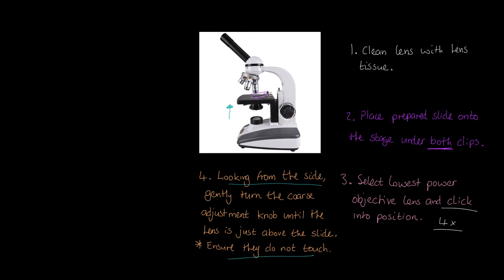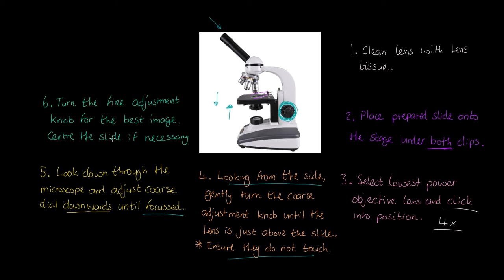So, next in our process, number five. Look down now through the eyepiece lens. And adjust the coarse dial downwards until focused. So, now what we're going to do is, we're using the coarse adjustment knob. And what we're doing now is, we're now bringing the stage down until we get a focused image. It's important that we adjust downwards in this stage.